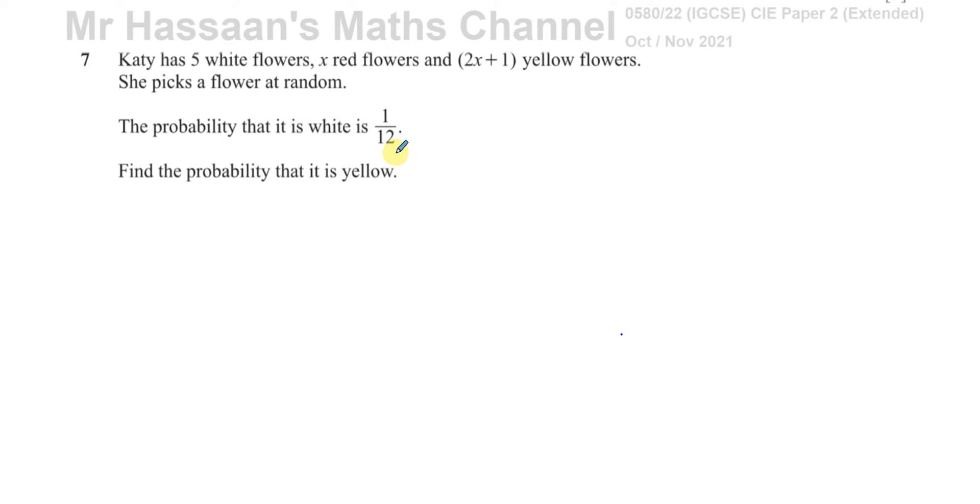So the probability that the flower is white is equal to 1 over 12. She has 5 white flowers. So we can say that 5 over the total number of flowers, which I'm going to call t, is equal to 1 over 12.